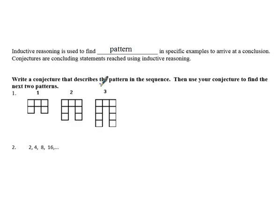So it says write a conjecture that describes the pattern, and then use your conjecture to describe the next two patterns. So what are we doing? We're going to add an additional square to each column. So columns go up and down.